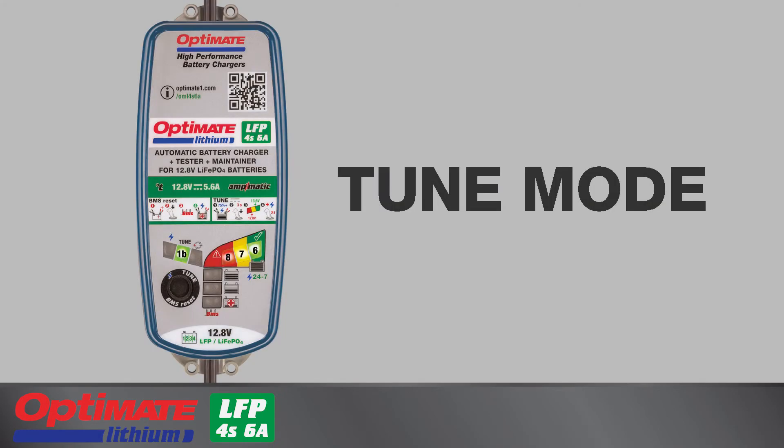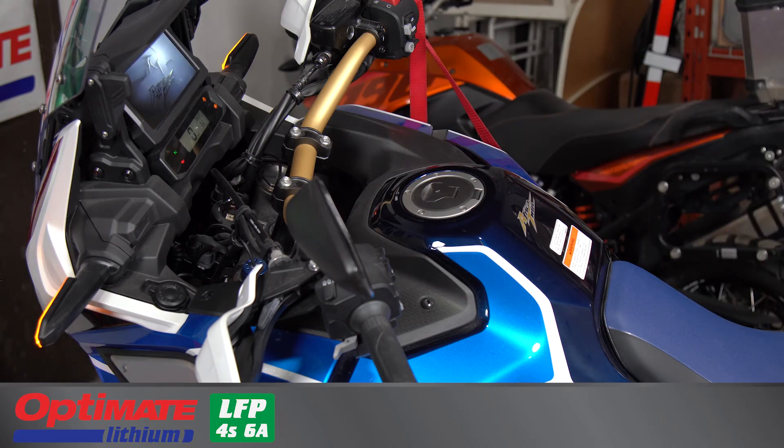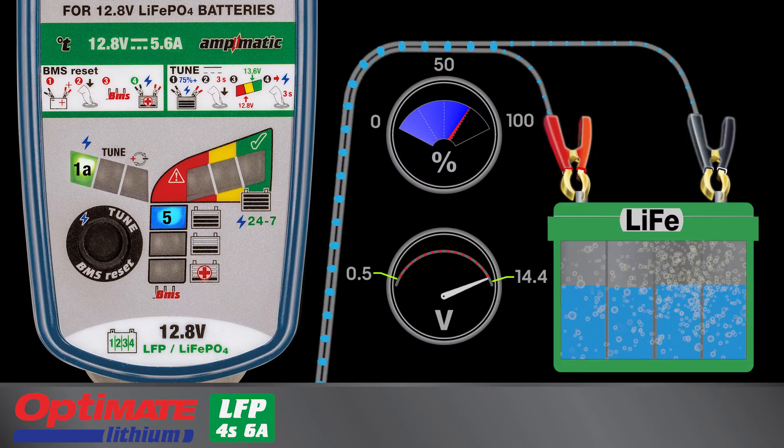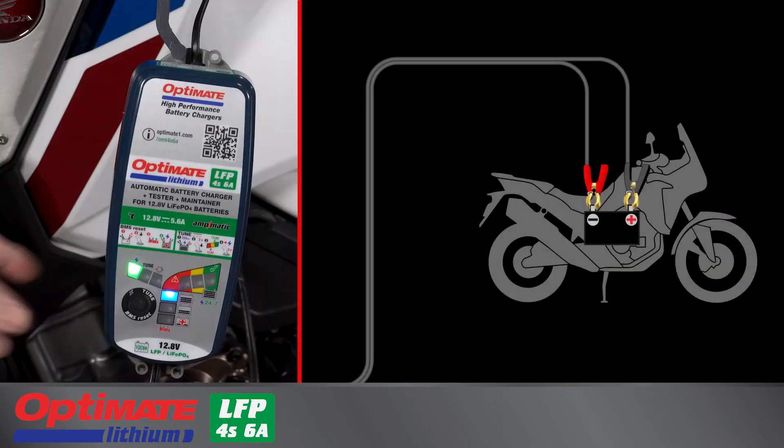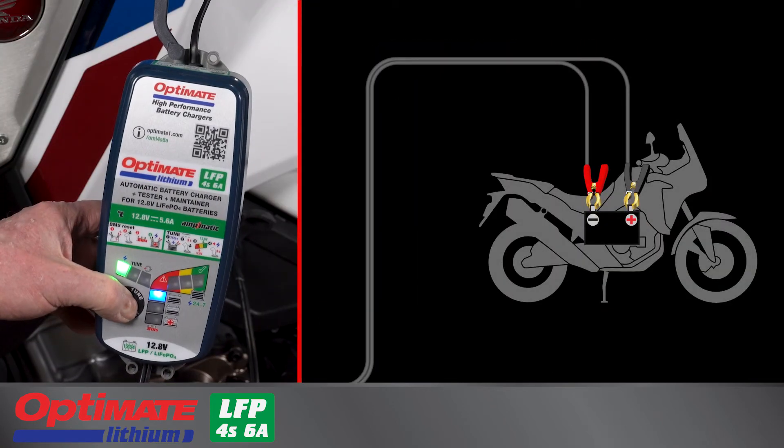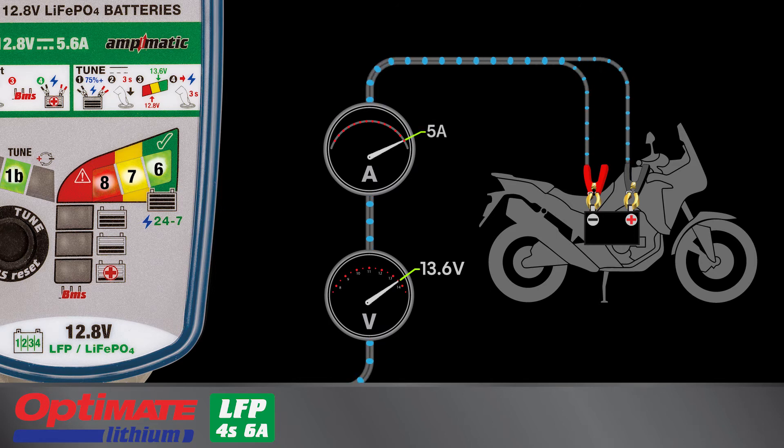Tune mode counters discharge from the active vehicle circuitry when the ignition system is on but the engine is not running. Tune mode can be activated if the battery has reached a 75% or higher charge level. Press and hold the button for three seconds until lamp 1b lights together with lamps 6, 7, and 8. Now a fixed voltage of 13.6 volts is delivered to the battery with a maximum current of 5 amps available to prevent or slow down battery discharge.